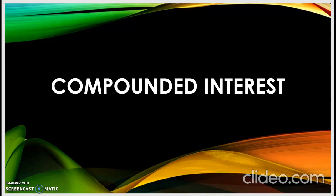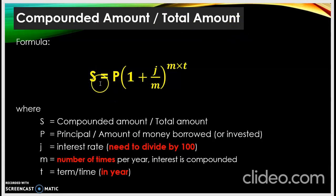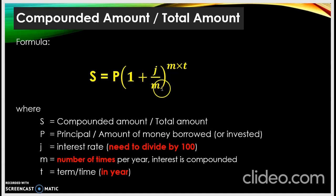In this video we will look at compounded interest. For compounded interest, the formula is: S is equal to P times, in the bracket, one plus j over m, to the power of m times t.